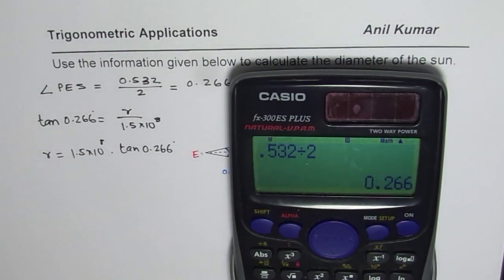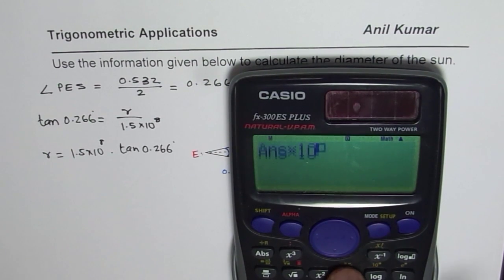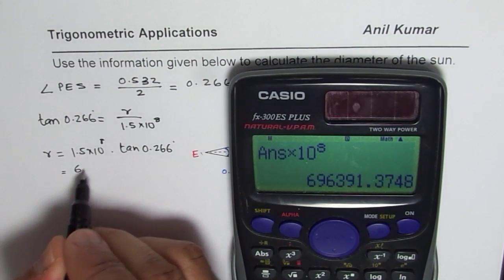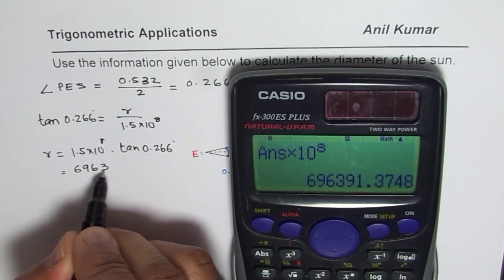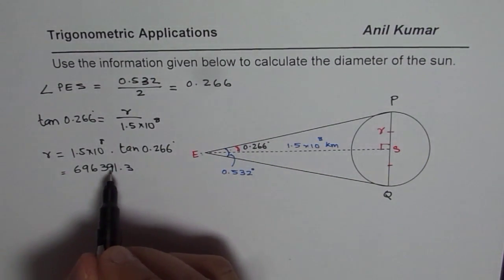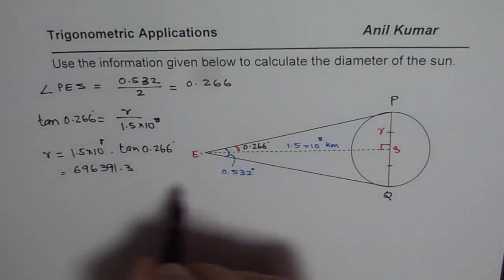So we have tan 0.266 equals to, multiplied by 1.5 equals to. So that gives us, we'll say, times 10 to the power of 8. 10 to the power of 8, so we'll get the answer. So it gives us the answer as 6 point, or we can just write this, 696391.3. So that is what we get, which could be 6.96391. So kilometers, so this is in kilometers.